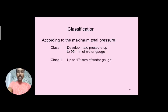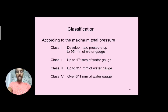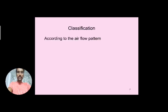According to maximum total pressure, fans are divided into different classes: Class 1 develops maximum pressure up to 95 mm of water gauge; Class 2 up to 171 mm of water gauge; Class 3 up to 311 mm of water gauge; and Class 4 is over 311 mm of water gauge.